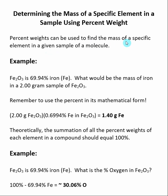Percent weights can be used to find the mass of a specific element in a given sample of a molecule. Say that Fe2O3 is 69.94% iron. What would be the mass of iron in a 2 gram sample of Fe2O3?